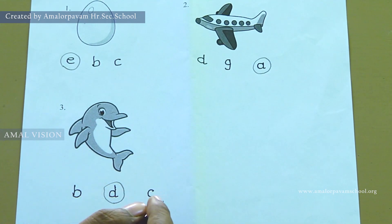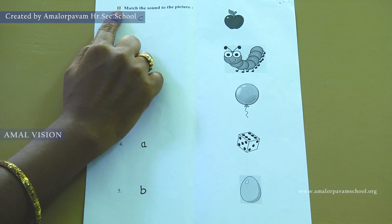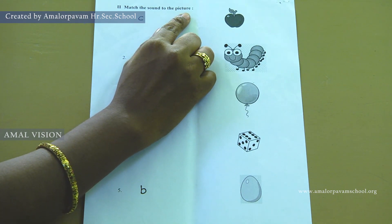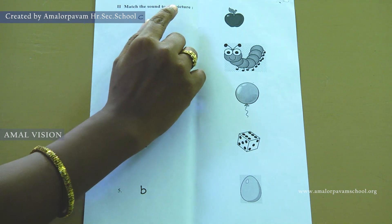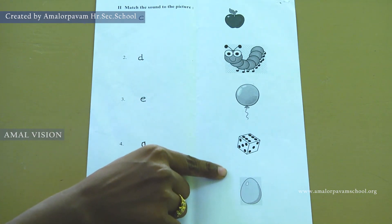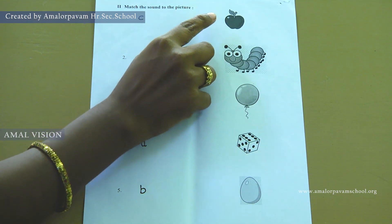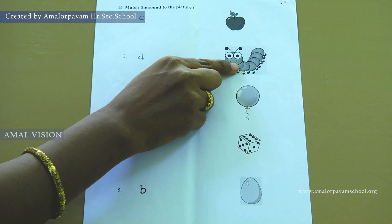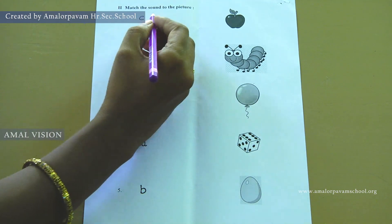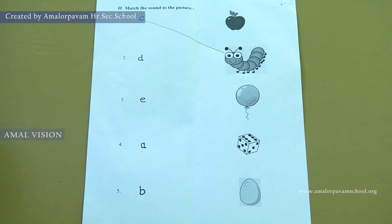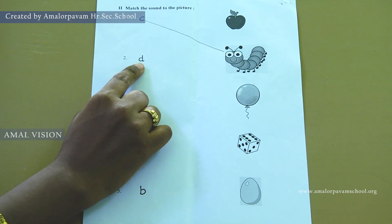Now turn the page. Keep finger on roman number two — match the sound to the picture. Keep finger in one. Can you see what sound is this? This is kuh. Look at this side — which picture starts with the sound kuh? Yeah, it's caterpillar. Kuh — caterpillar. Take your pencil, keep it near to the sound kuh and match it to the picture caterpillar.